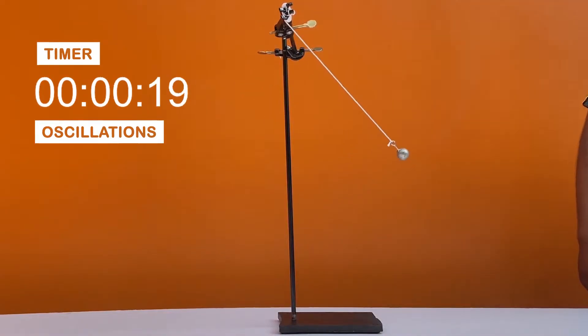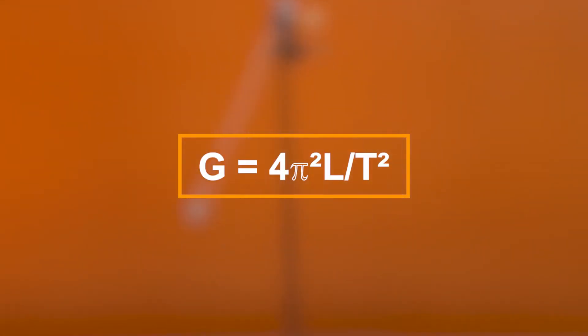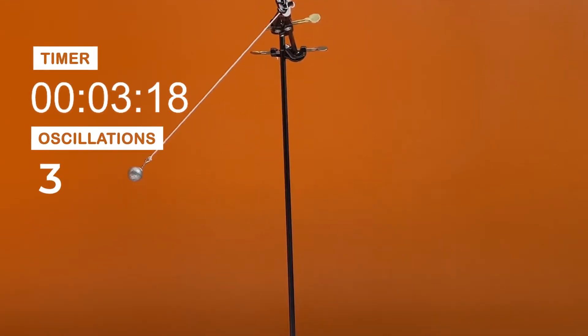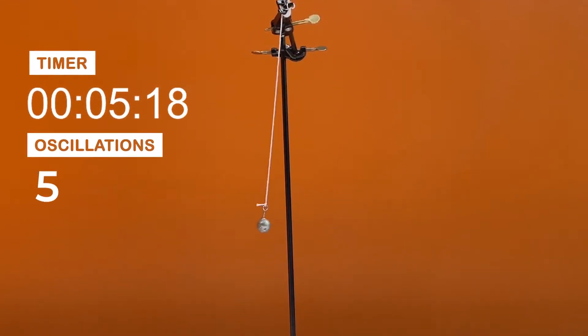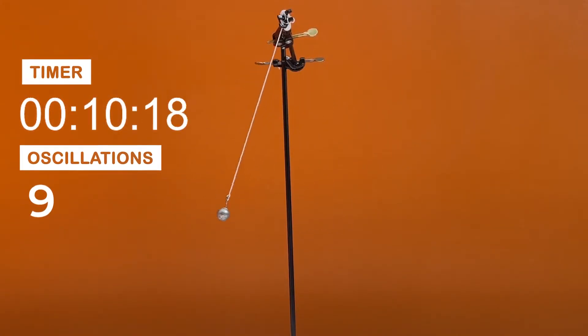By measuring the period of a pendulum as well as its length, we can determine the value of g, where g equals 4π² L over T². We assume that the frequency and period of the pendulum depends on the length of the pendulum string rather than the angle from which it was dropped.